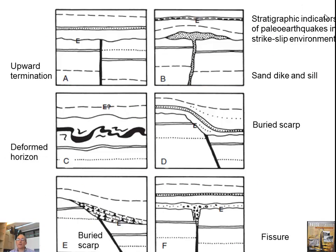These are the stratigraphic indicators of paleoearthquakes in strike-slip environments. Almost every time, it's an unconformity. The 'E' always means earthquake. Upward termination of faults is the most common evidence, but it's not always definitive, because sometimes faults terminate below the ground surface — they just stop at some interface. Other evidence includes a deformed horizon: especially shallowly, layers may be unconsolidated, and if shaken, you get deformation that is then buried.